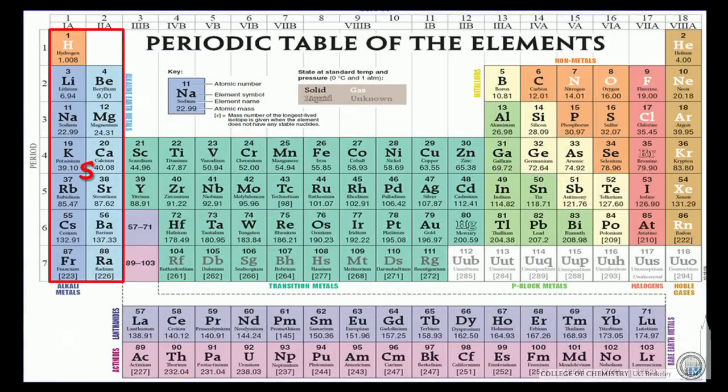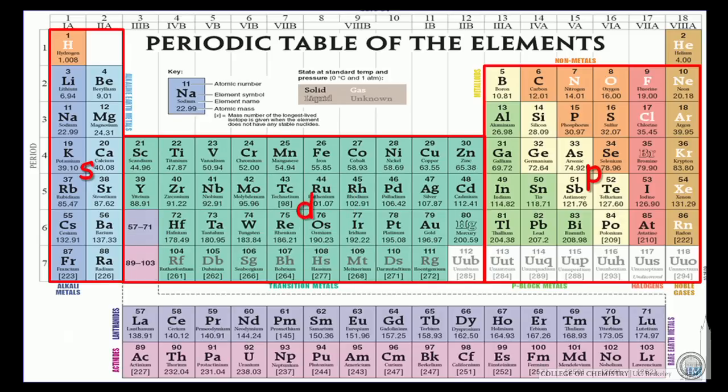You can see that the s filling elements, that is, their highest energy electrons are s, are here. This block here of 6, it's not coincidental it's 6. There's 6 elements here because there are 6 p electrons, 3 orbitals, 2 electrons in each. This group in the middle is where the d electrons. So there should be 10 here. There's 5 equivalent d orbitals. That'll give you 10 electrons.